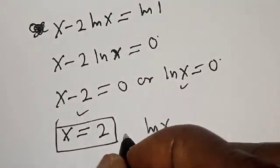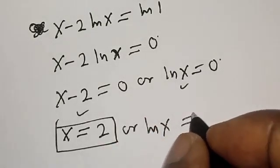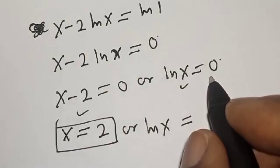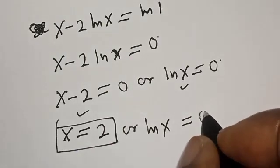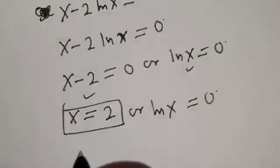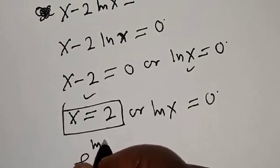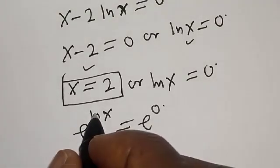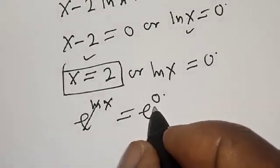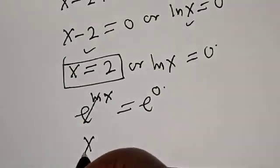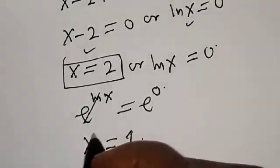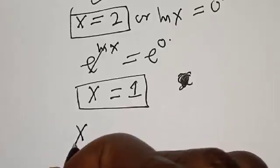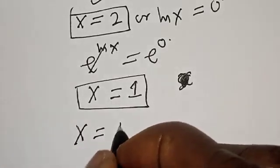From the second case, natural log of s equals zero. We raise e to both sides: e raised to the power of natural log of s equals e raised to power zero. The e cancels the natural log, and e raised to power zero equals one. So s equals one — that is the second value of s.